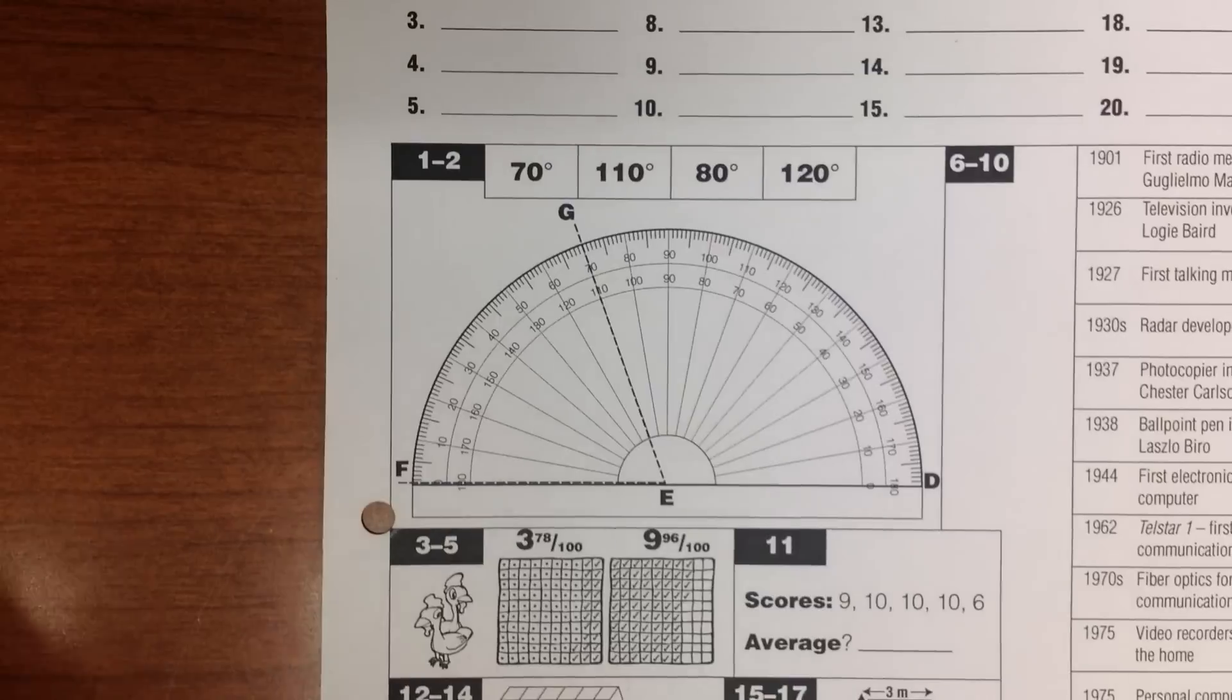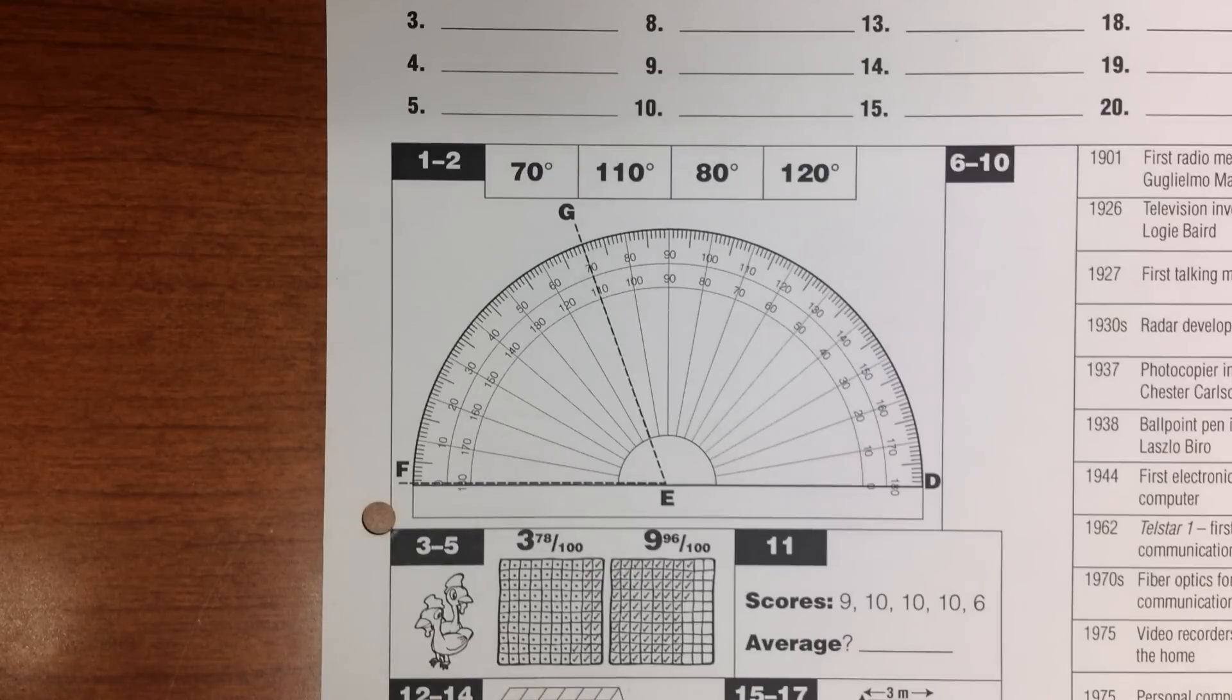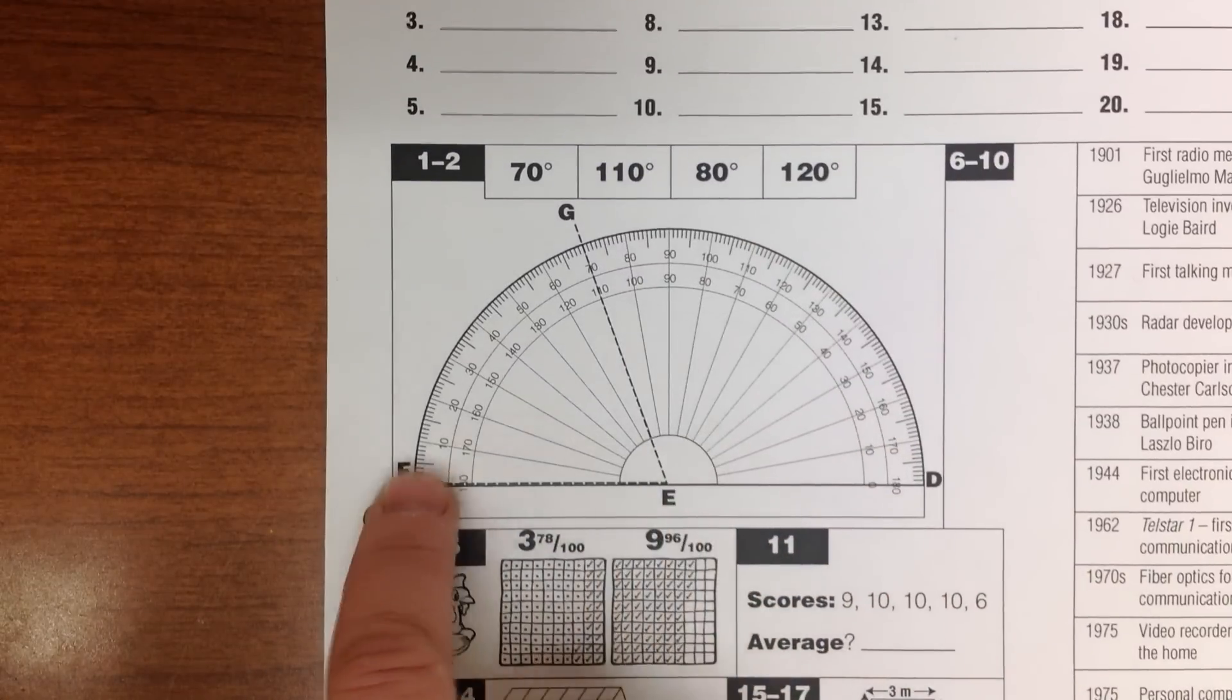Number 2. Two angle sums that total 180 degrees are said to be supplementary. What is the size of D, E, G's supplementary angle? G, E, F?